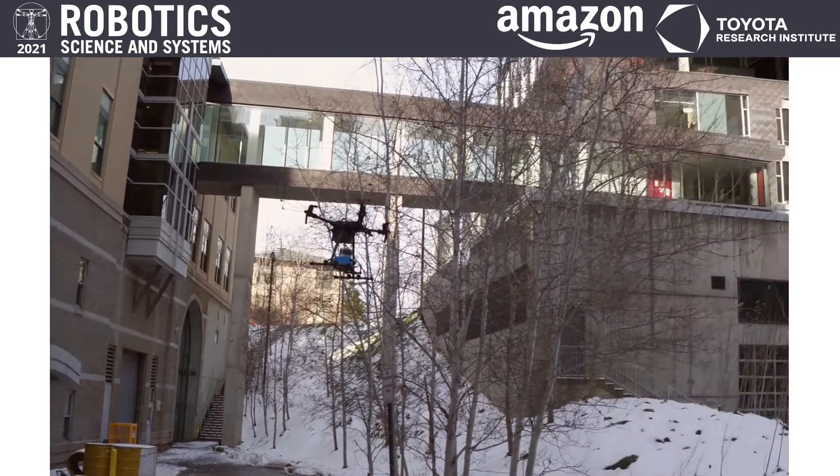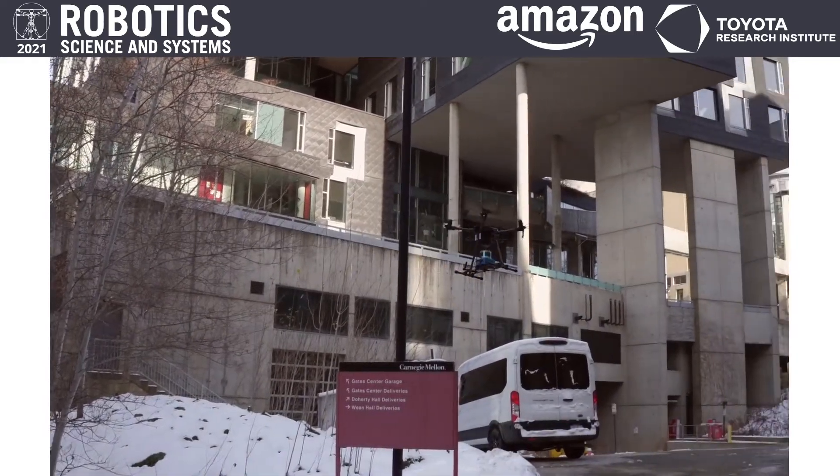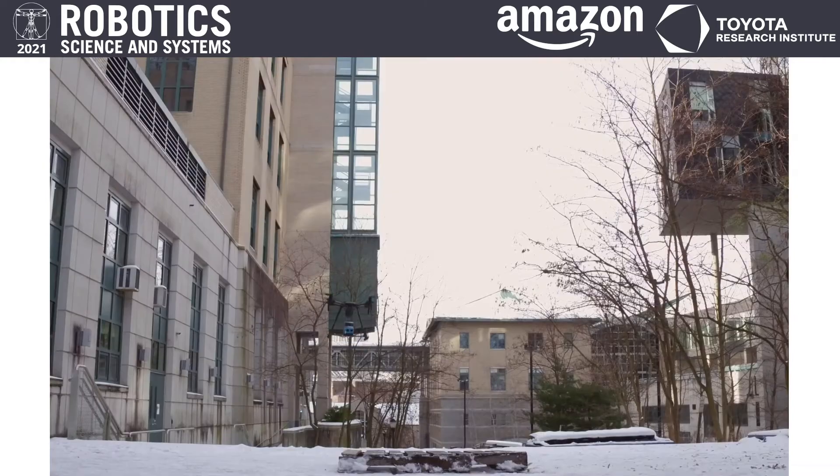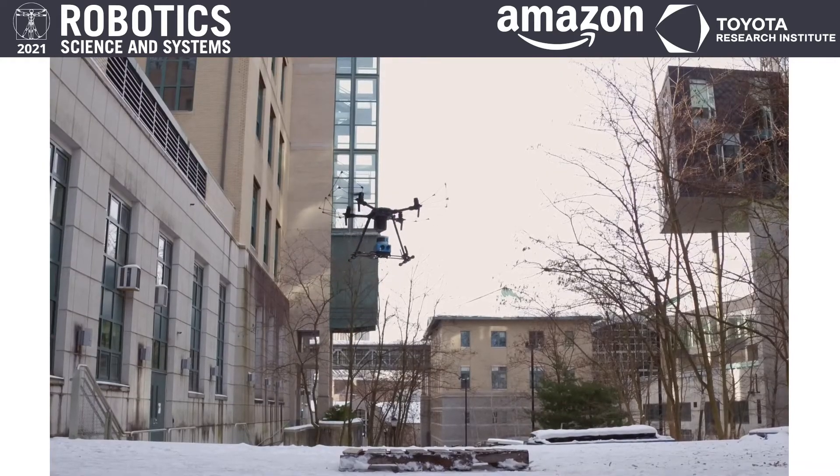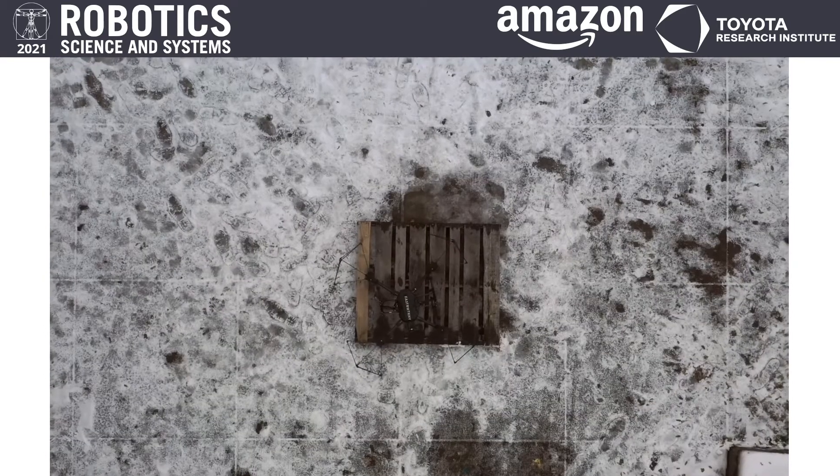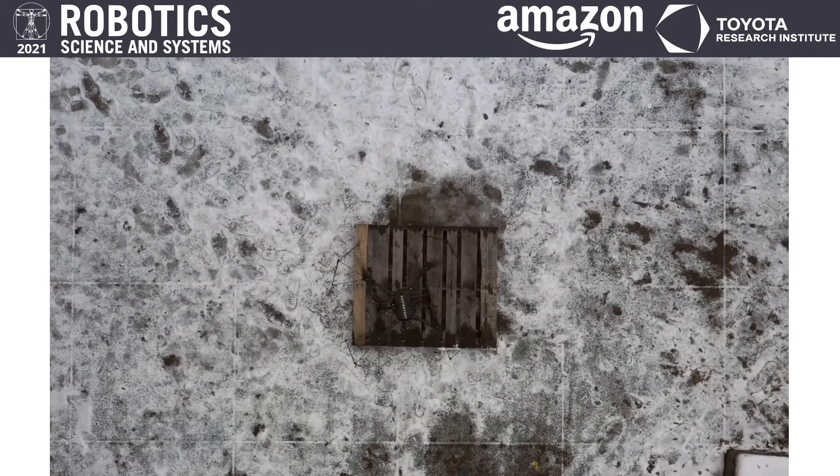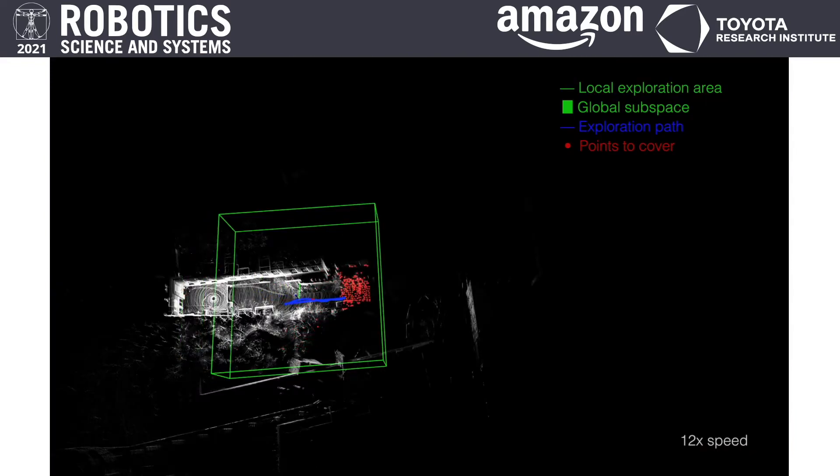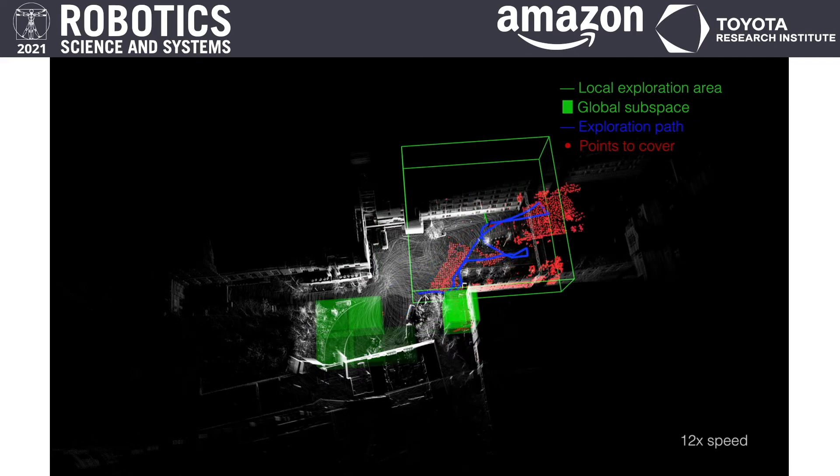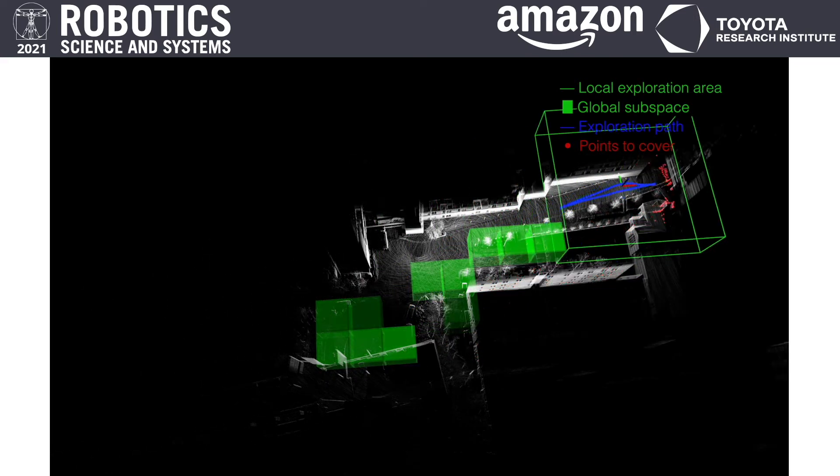The result here is from a lightweight aerial vehicle exploring a section of the university campus. The system integrates a 3D scanning LiDAR, a forward-looking camera, and an IMU for state estimation. The exploration planner takes the registered scan data as the input to compute the paths.